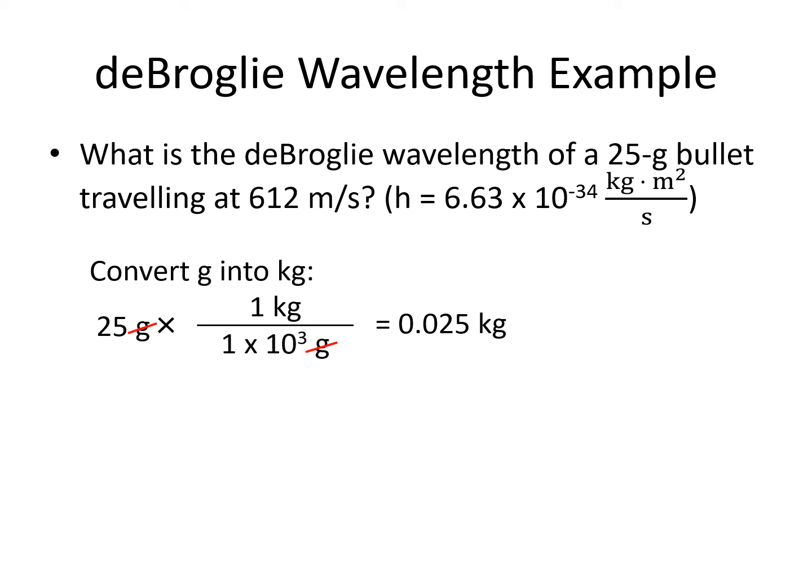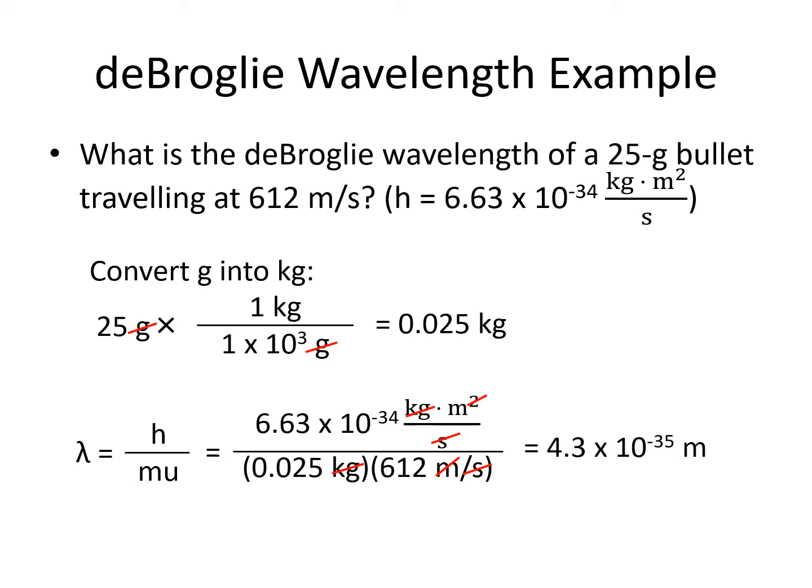Since we are solving for wavelength, we leave our equation as is, but if we were solving for mass or velocity, we would have to rearrange our equation. We plug in our numbers. Kilograms cancels out with kilograms. Seconds in the denominator of the numerator cancels out with seconds in the denominator of the denominator. One of the meters out of the meters squared cancels out with meters in the denominator, so we are left with the other meters as our units. We come out with 4.3 times 10 to the minus 35 meters.